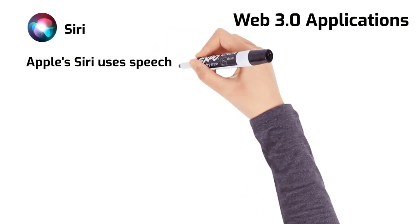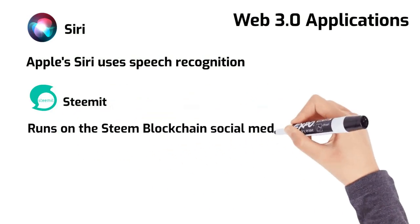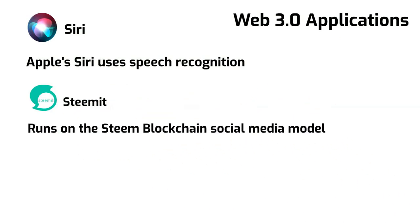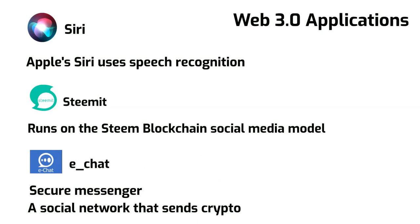Apple's Siri uses speech recognition along with artificial intelligence to perform complex and personalized commands. Steemit is a decentralized reward platform that runs entirely on the STEEM blockchain social media model, rewarding content creators or bloggers with cryptocurrencies for contributing content on the site. eChat is a Web 3.0 app powered by a decentralized blockchain — essentially a secure messenger, also known as the fastest-growing social network used to send cryptocurrency.